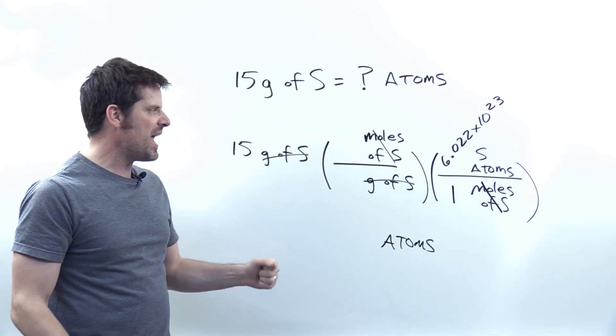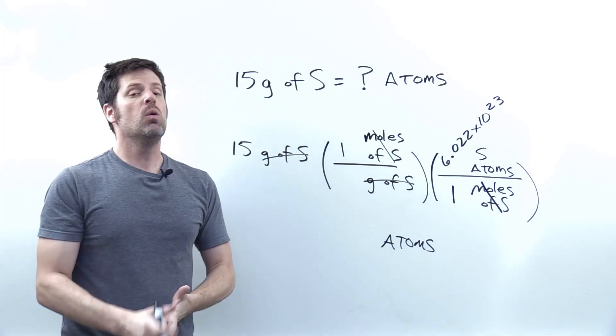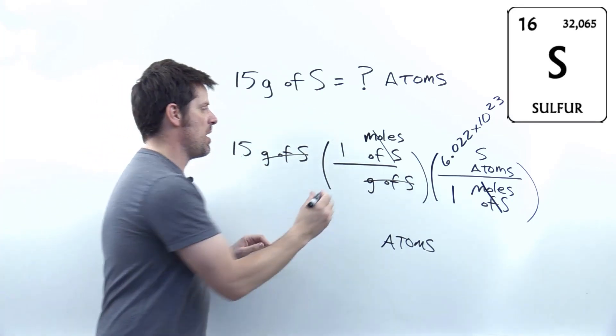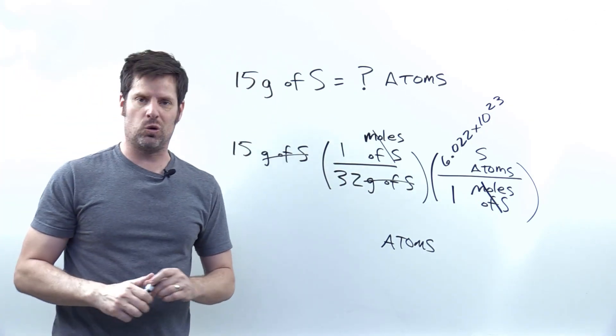Now we just have to fill in numbers here. If I have one mole of sulfur, how many grams of sulfur do I have? Well, on the periodic table, you'll see that sulfur's atomic mass is about 32. So we'll put that number there. From here on, it's just crunch the numbers.